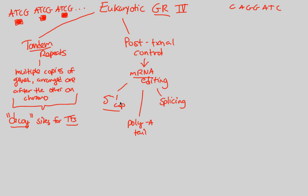While the 5' cap and poly-A tail happen almost every time, we can also do something called alternative splicing — splicing one way in one context and a different way later. This can change how the mRNA is expressed and translated based on different splicing patterns. For the purposes of this course, understand that splicing is a great way to edit the mRNA and thus control and regulate gene expression.